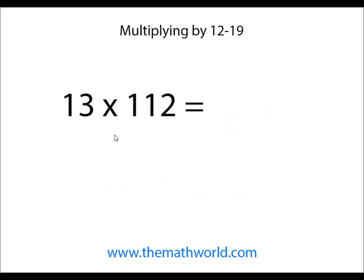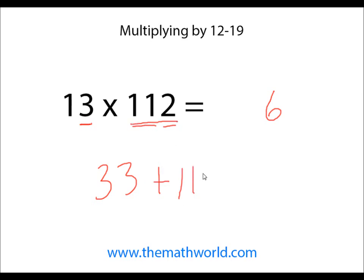Next example we're going to look at is 13 times 112. 112 this time being a three-digit number, but it works the same. We're going to take 3, multiply it by the ones digit of the other number, so 3 times 2. We're going to go ahead and write down 6. There's no remainders to carry over. The next thing we're going to do is 3 times the other number — in this particular case, it's 11. So we'll go ahead and write down 33, and add 33 to this entire number, 112. 33 plus 112 is 145. And so 13 times 112 is 1,456.